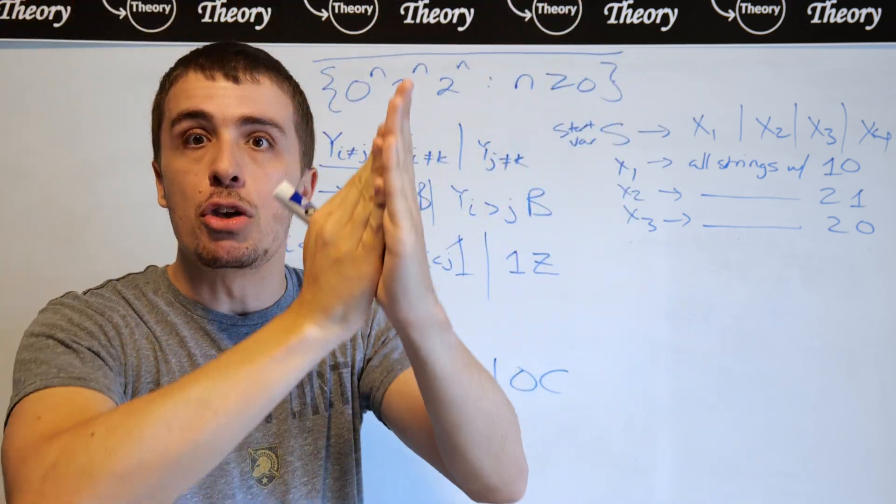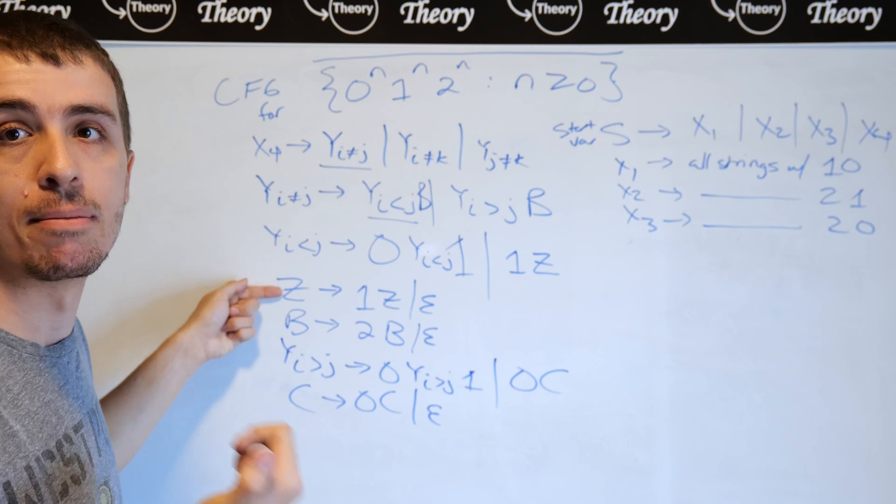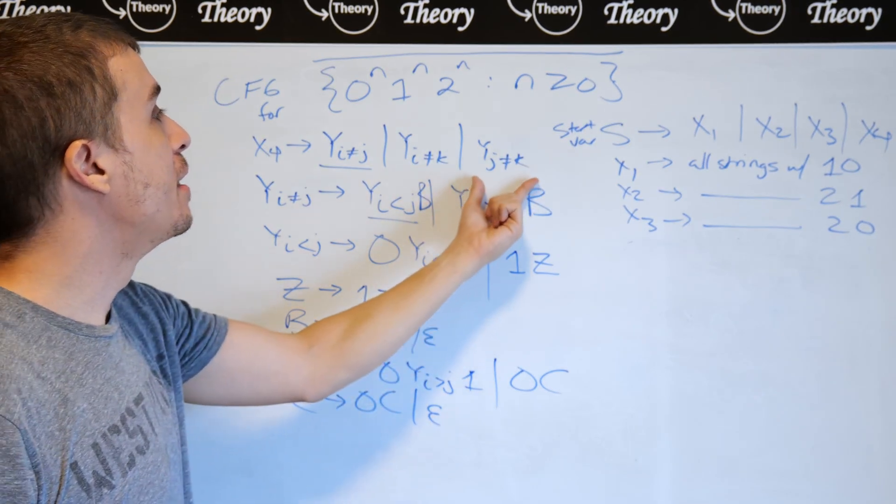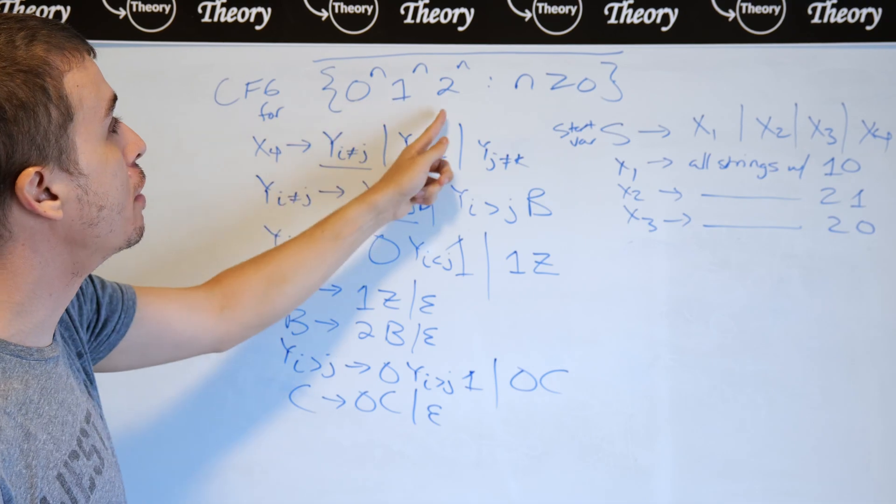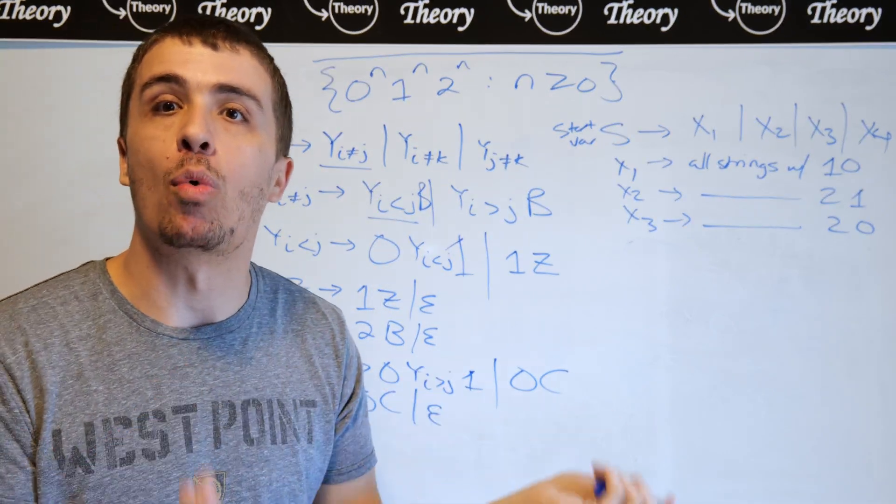eventually making more twos or more zeros, depending on which one you're working on. And then in the middle, you call a different variable, namely z in this case, because it makes any number of ones that it wants. And then this one, you ignore the zeros, and then do the exact same idea as right here, but with the ones and twos instead.